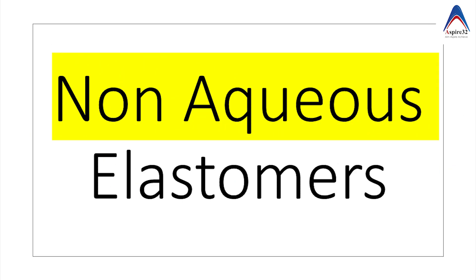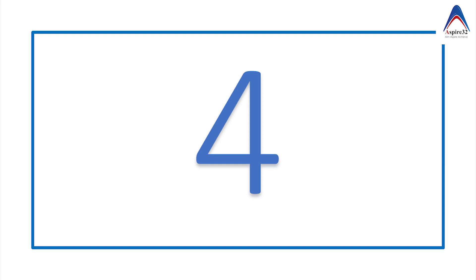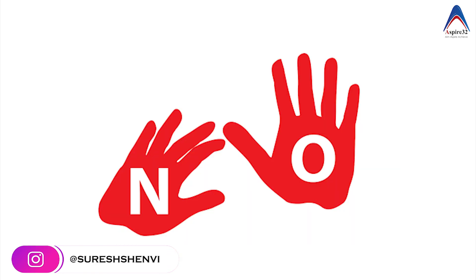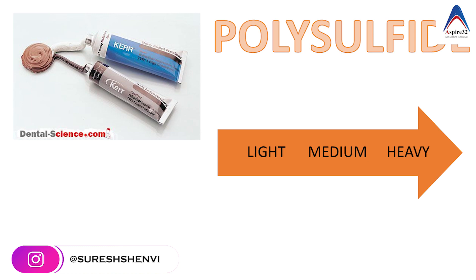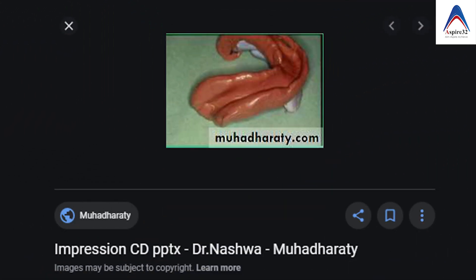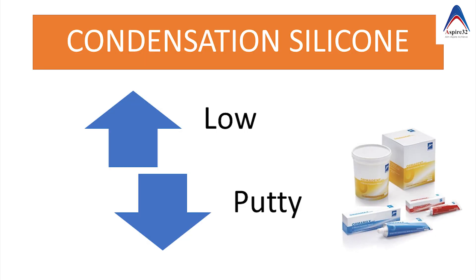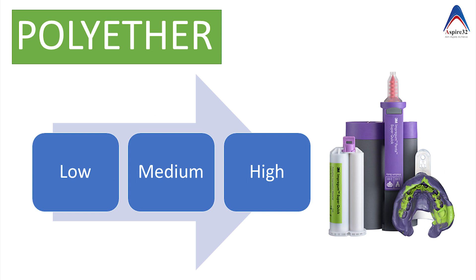There are four categories of chemicals used to make elastomeric impression material, but that doesn't mean each chemical is available in four consistencies. For example, there is no putty consistency in polysulphide, which is why you have to use a customized tray for polysulphide impression materials. In addition silicone you have more than four consistencies, in condensation silicone just light body and putty, and in polyether we have light, medium, and heavy consistency.